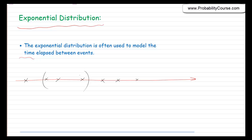Now if you have a situation like that, then the time between arrivals — for example the time from the first until the second arrival, or from the second arrival until the third arrival, and so on — these times are going to be exponentially distributed. So if this is my random variable X, then X is going to have an exponential distribution. We will talk about this in much more detail when we talk about Poisson processes.